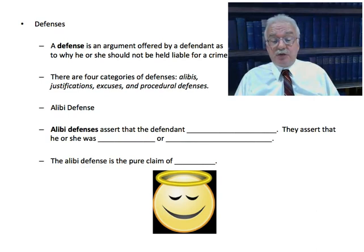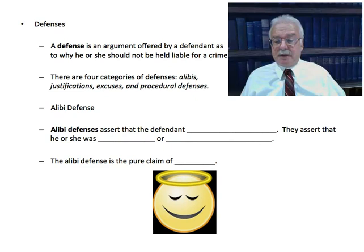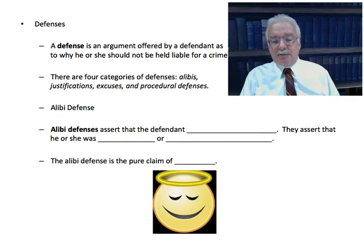Let's first talk about the alibi defense. An alibi defense asserts that the defendant didn't do it — they assert that he or she was not there, or if there, didn't do it. So the alibi defense is a pure claim of innocence.